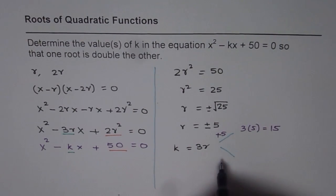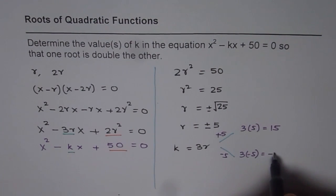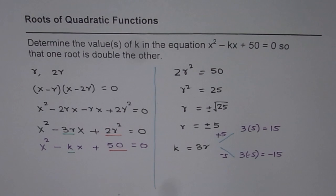And if r is -5, in that case, value of k will be 3 times -5, which is -15.